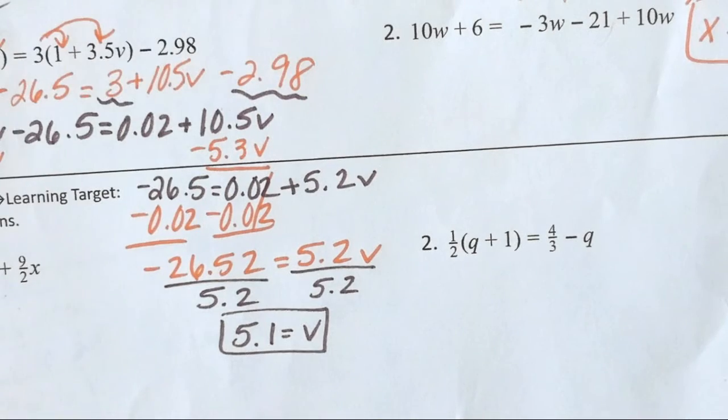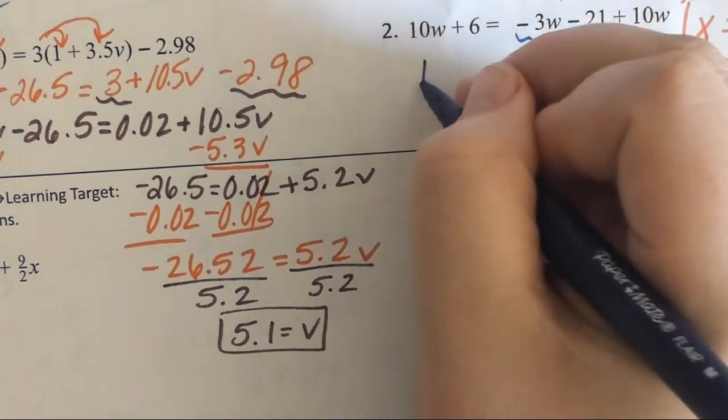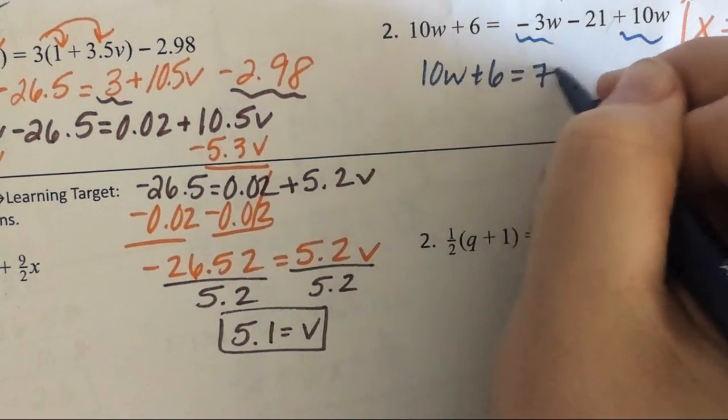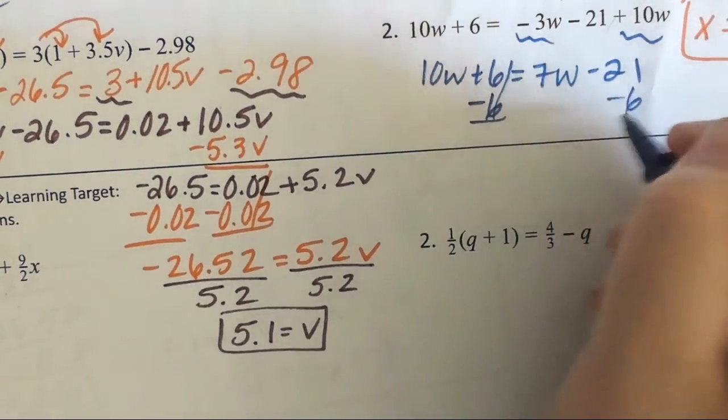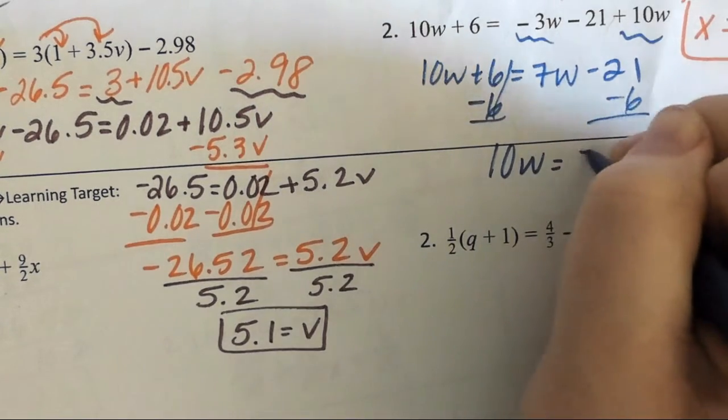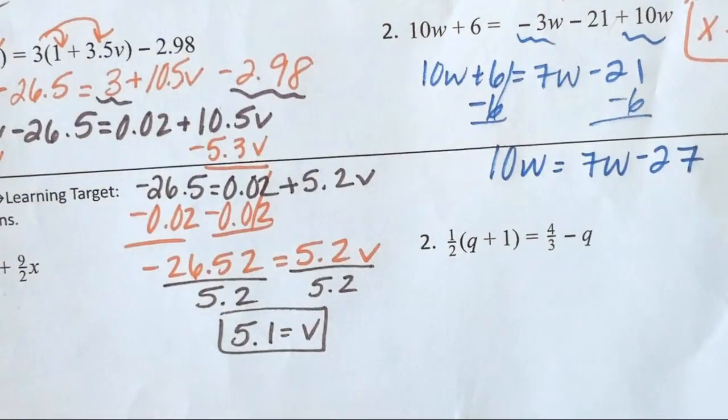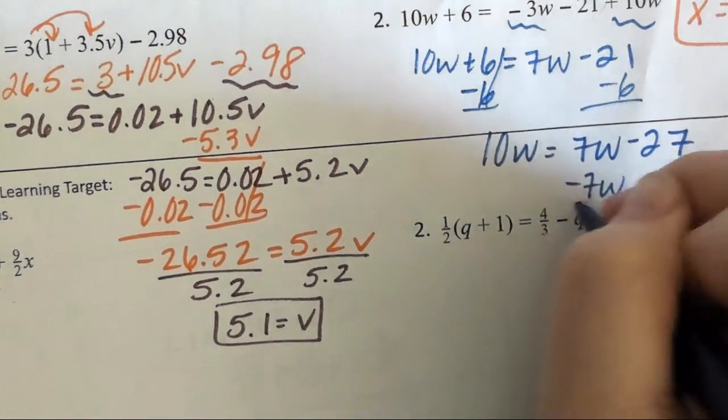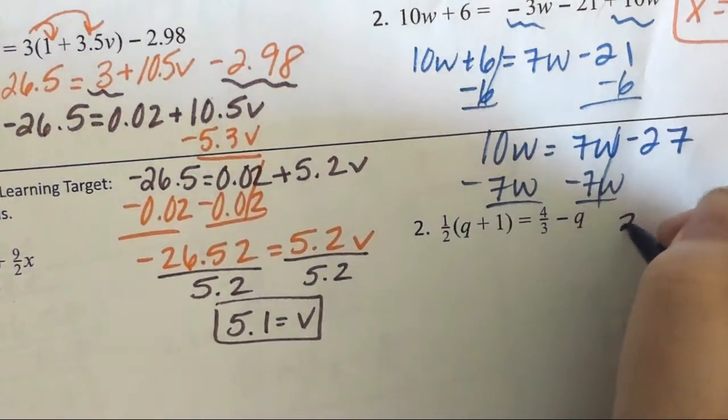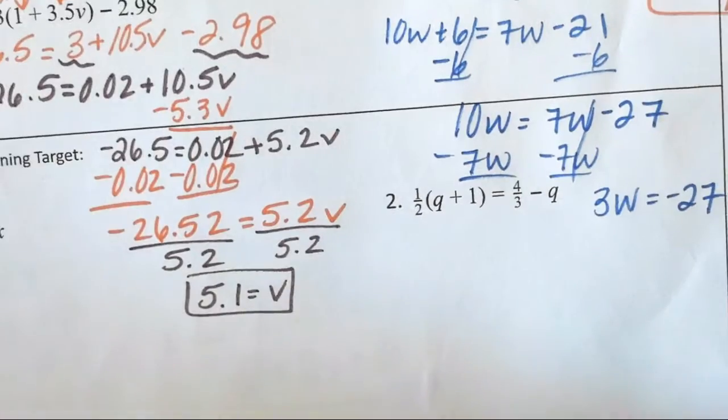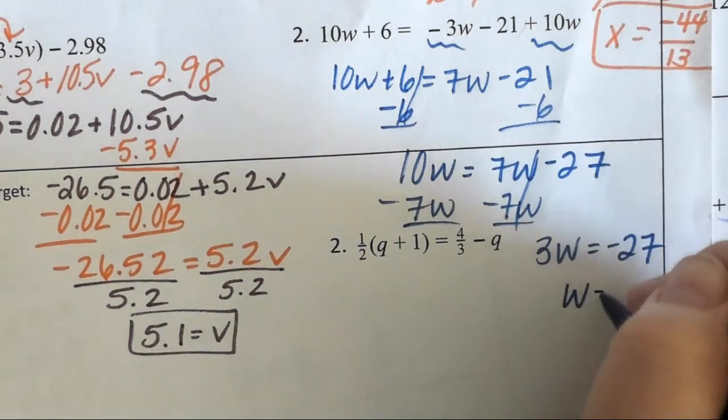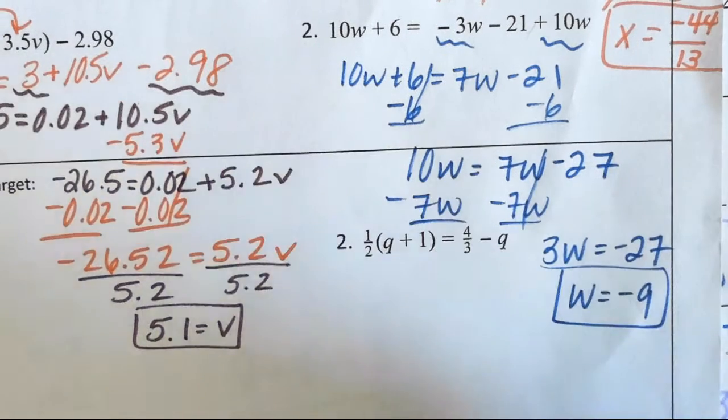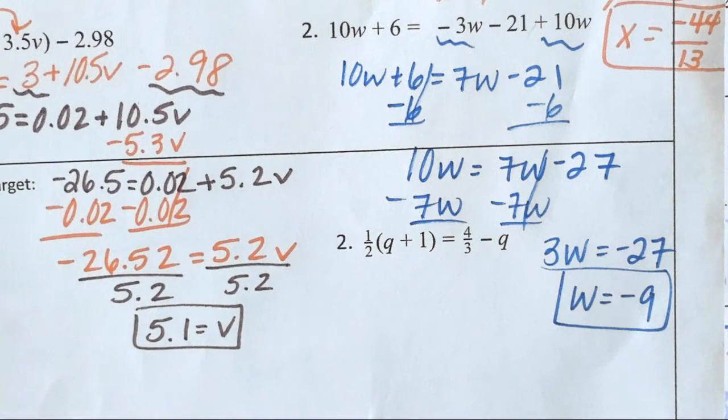For the second bell ringer, I'm going to fly. If I combine like terms, I would have 10w plus 6 equals 7w minus 21. If I subtract the 6, I would have 10w equals 7w minus 27. If I subtract the 7w, I would have 3w equals negative 27. I divide by 3, and I get w equals negative 9. That one's a little easier.